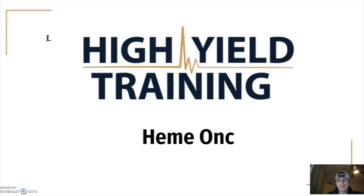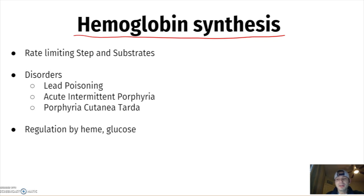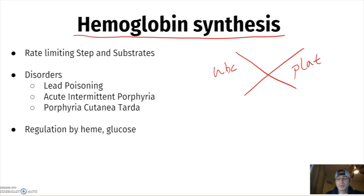Let's talk about hematology — it's a very high-yield system. What you really need to know is hemoglobin synthesis. Every day you get a CBC and look at four things: white blood cell count, platelets, hemoglobin, and hematocrit.